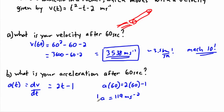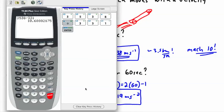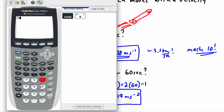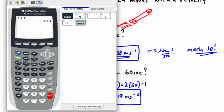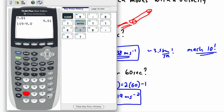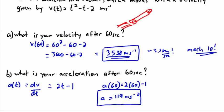The acceleration due to gravity on Earth is 1g = 9.81 m/s². If we take our acceleration of 119 m/s² and divide by 9.81, that's around 12 times the force of gravity — about 12 g's.